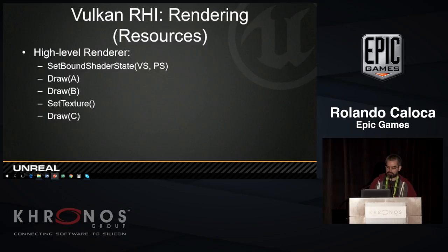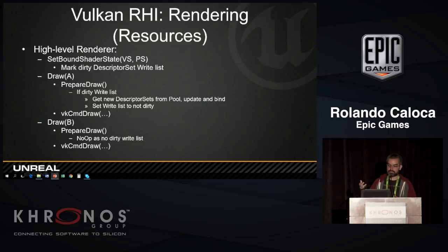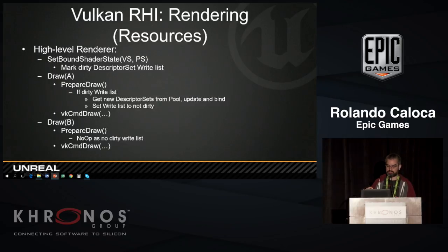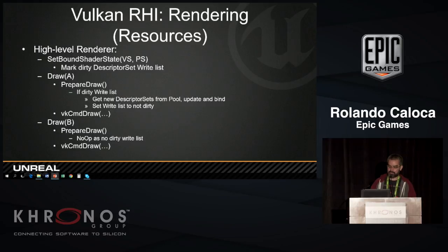For resource setting in the engine, it's a similar pattern. On set bound shader state, we have a descriptor write list that we mark as dirty. On the first draw call, prepare draw checks if it's dirty; if so, it allocates a new set of descriptor sets from the pool, updates and binds it, then marks the write list as not dirty, and calls vkCmdDraw. On the next draw call, if the write list is not dirty, it just calls vkCmdDraw. Then when we switch a texture, it updates the write list and sets it to dirty again, and the next draw call allocates a fresh set of descriptor sets.